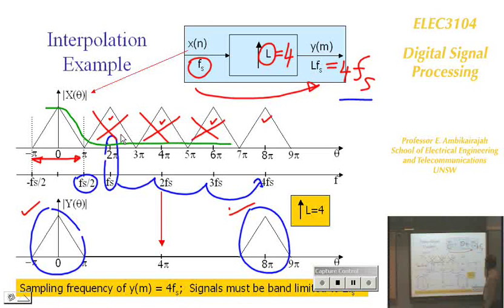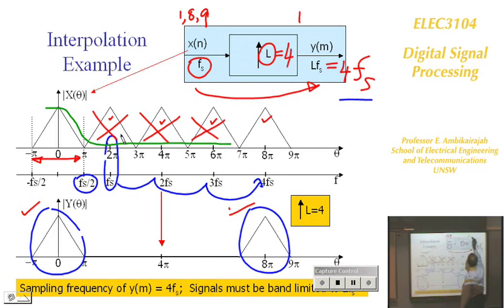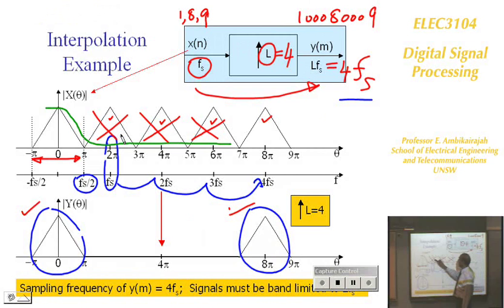The low-pass filter removes the unwanted images. The zeros in the sequence will then come up with real values because the low-pass filter performs interpolation between the original samples. So the zeros become meaningful values, and you have your interpolated signal back.